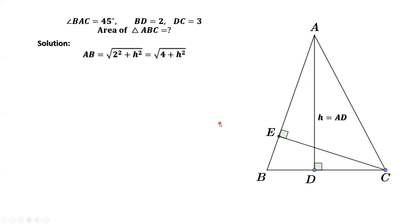Similarly, we use the right triangle ADC to find AC. AC equals square root of DC square plus AD square. AD is H. DC is 3. 3 square equals 9.